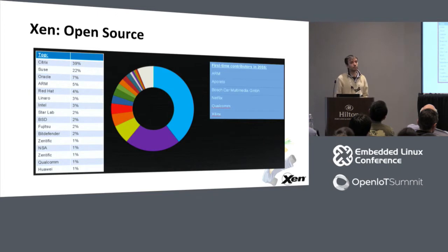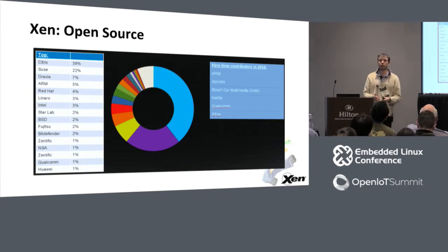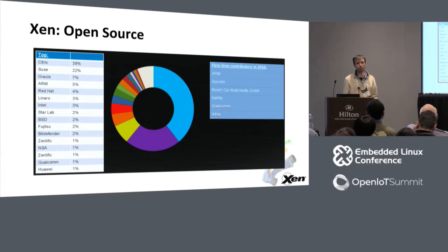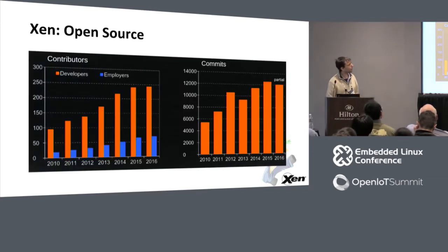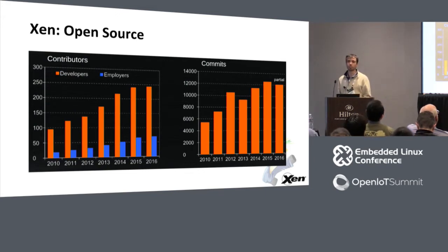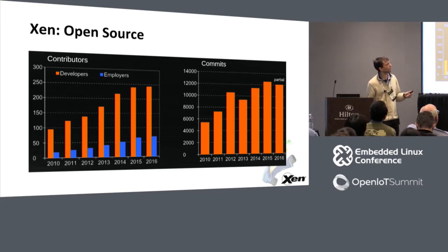Xen is an open-source project, GPL v2 — same license as the Linux kernel — and works pretty much the same way. We have a mailing list, a diverse community, and different companies contributing. We are growing in terms of contributors, employers of those contributors, and commits. The stats for 2016 are a bit unusual because we haven't counted all repositories yet.